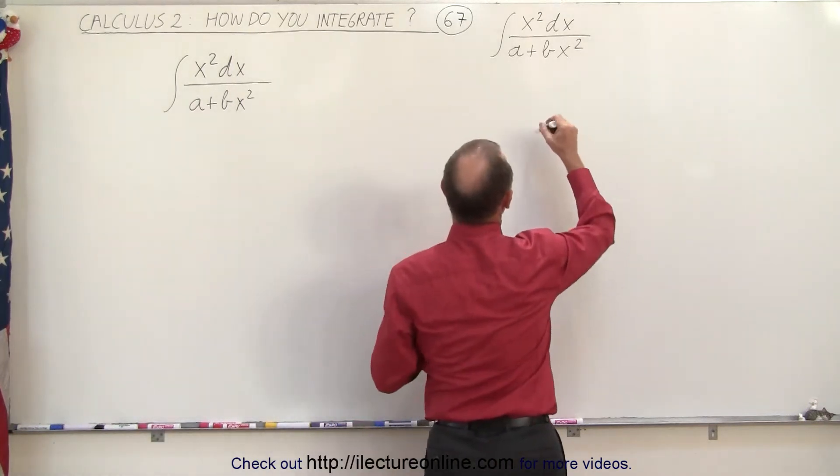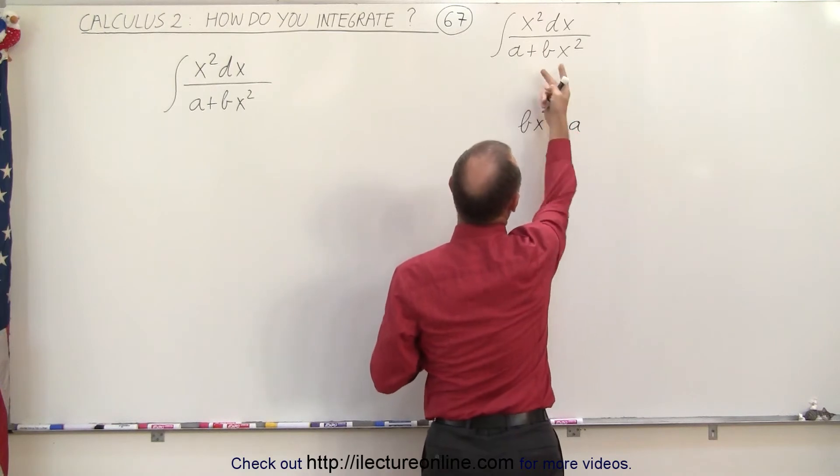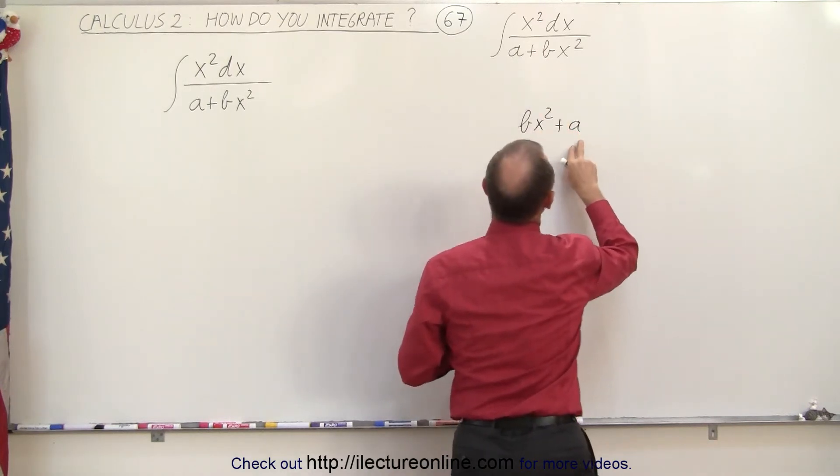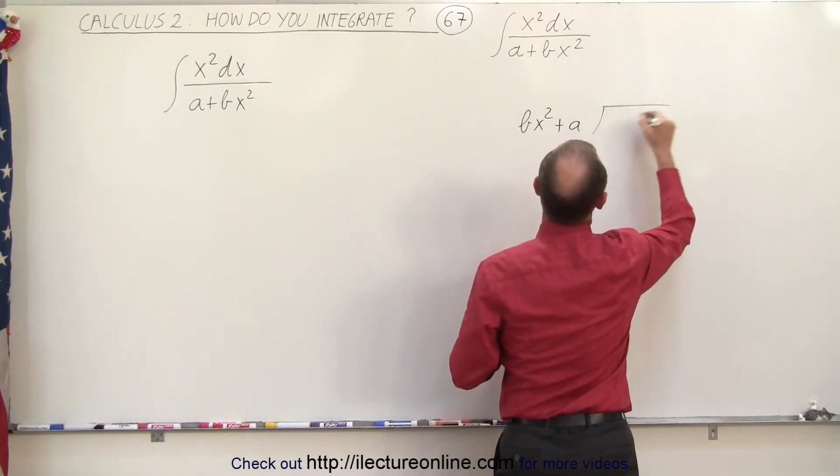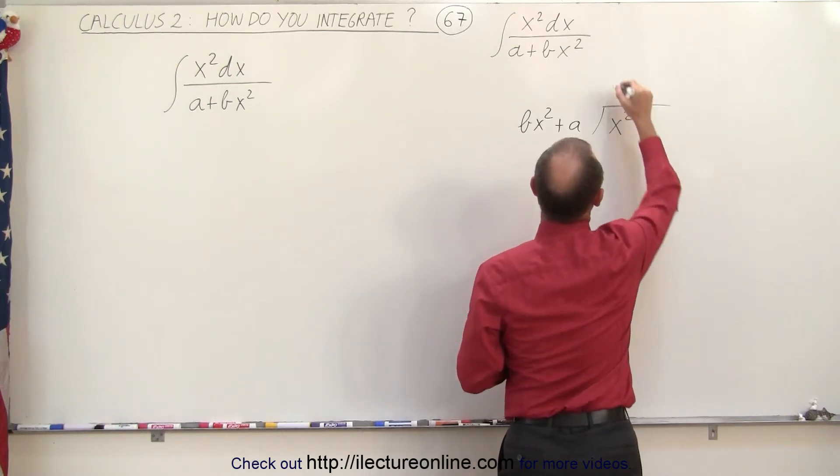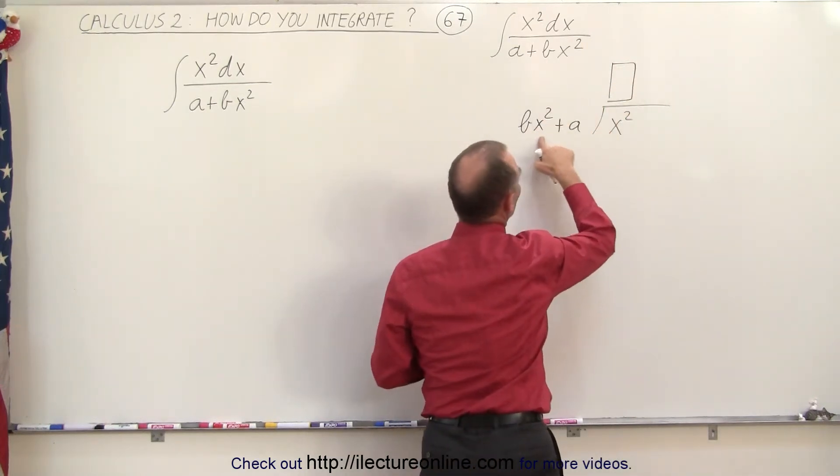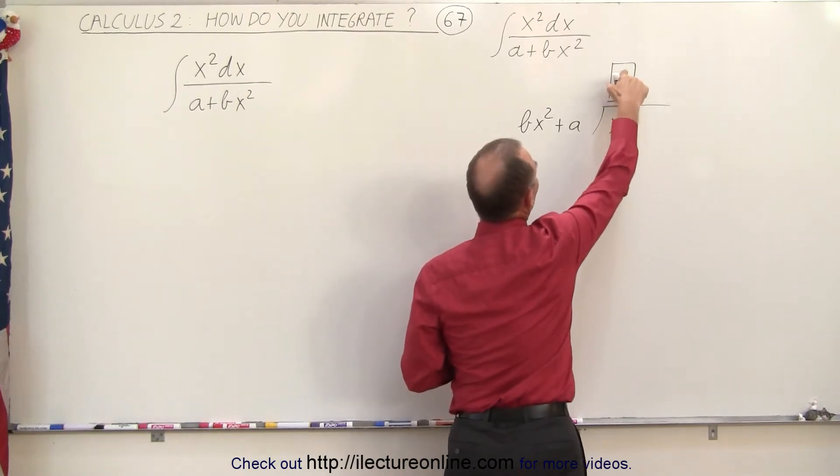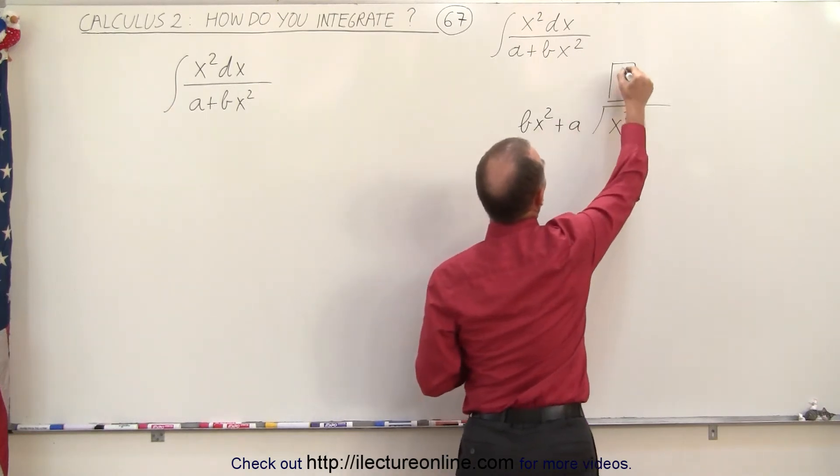Let's divide bx squared plus a into the numerator which is x squared. We need something multiplied times bx squared to give me x squared. So 1 over b times this will cancel out to b.